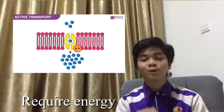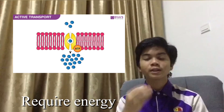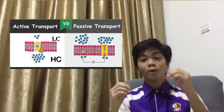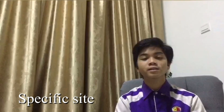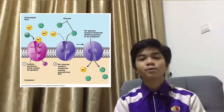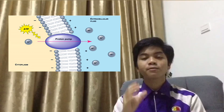First of all, active transport requires energy from the ATP molecule because it moves against the concentration gradient. While diffusion moves from high concentration to low concentration, active transport moves from low concentration to high concentration. It also requires specific carrier proteins of specific size, such as the sodium-potassium pump, which is only specified for sodium and potassium ions, and the proton pump, which is only specified for hydrogen ions.